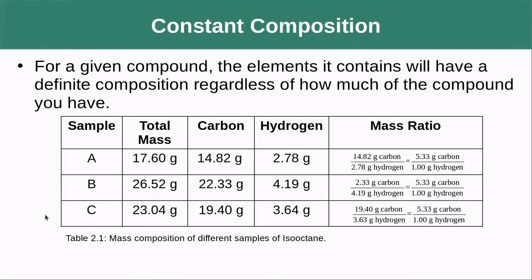Constant composition — we can put a little math to that. If we look at our example here, we took the exact same compound, isooctane, with different masses for three different samples. When we test for the amount of carbon and hydrogen contained in it, we get differing amounts, but the ratio of carbon to hydrogen is always the same — there are always 5.33 grams of carbon for every one gram of hydrogen. They have a constant composition.